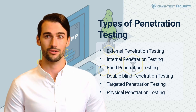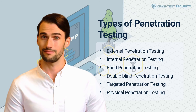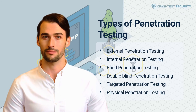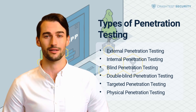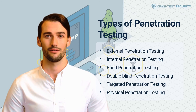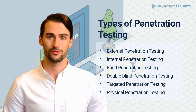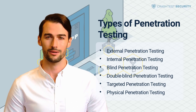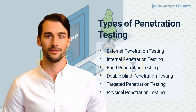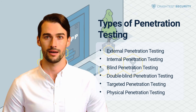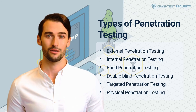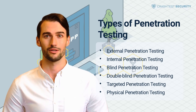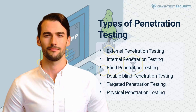Physical Penetration Testing: Here, cybersecurity professionals try to find physical threats, which means every attack that could be simulated involving physical locations. It may include picking door locks, stealing devices, or using social engineering to convince an employee to let hackers into a server room.